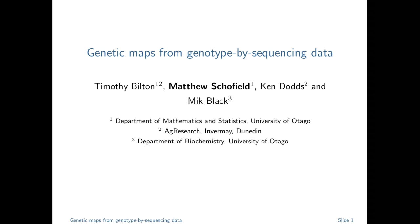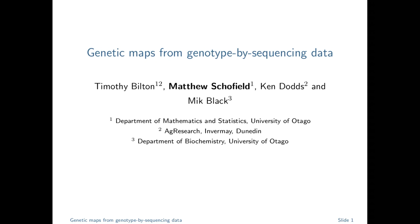Today we're honored to have Matthew Schofield from the University of Otago. Matt is currently a senior lecturer, and before that he was a postdoc with Andrew Gelman at Columbia University, where Matt was working on Bayesian hierarchical models with applications in ecology. Today Matt is going to talk about genetic maps for genotyping-by-sequencing data.